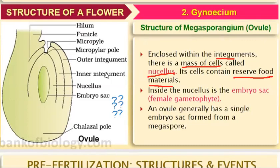Inside the nucellus is the embryo sac. The hilum is the point where the ovule is attached to the ovary. The funicle is the stalk which connects the ovule to the placenta. Micropyle is the point where the integuments are absent. The micropylar pole is the pole where the micropyle is present.